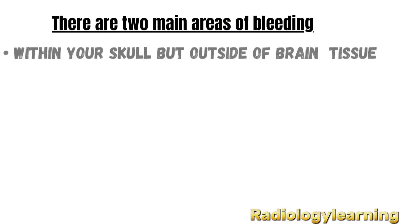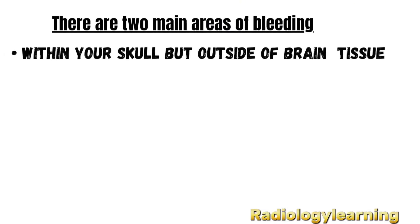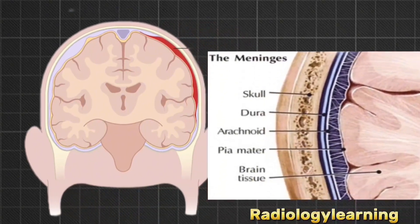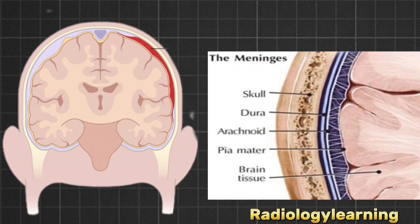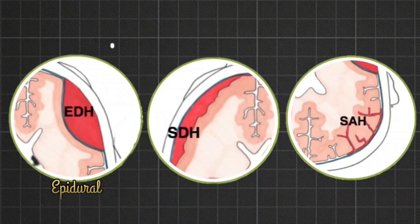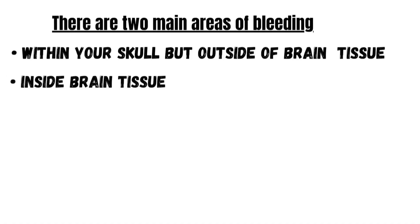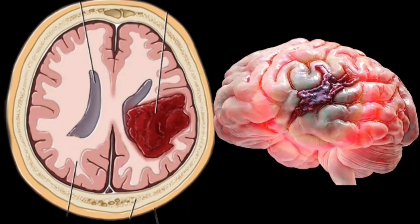There are two main areas where bleeding can occur in the brain. First, bleeding within the skull but outside the brain tissue — blood collects between the protective layers surrounding the brain, not in the brain itself. This is known as extraaxial hemorrhage and includes EDH, SDH and SAH: epidural, subdural and subarachnoid hemorrhage. Second, bleeding inside the brain tissue itself, called intraaxial hemorrhage, which involves direct damage to the brain and can be more serious depending on location and size.